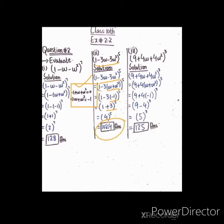4^5 = 1024۔ 4^5 کا مطلب یہ ہے کہ آپ نے 4 کو پانچ بار multiply کروائیں۔